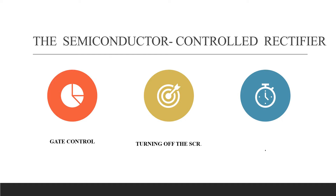We are studying power devices and so far we have studied the PNPN diode, which is a four-layer device with two terminals: anode and cathode. Today we will consider the semiconductor controlled rectifier, which is similar to the PNPN diode in that it also has four layers, but it has a third terminal as well, known as the gate. So it has anode, cathode, and gate. Today we will initially see what the semiconductor controlled rectifier is, then its gate control, and how it can turn off from on state to off state.